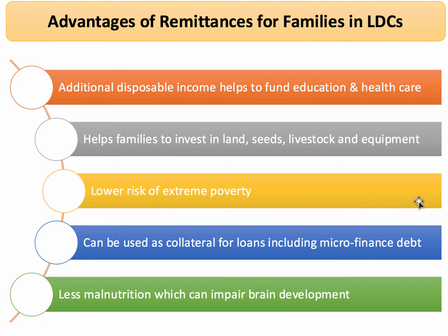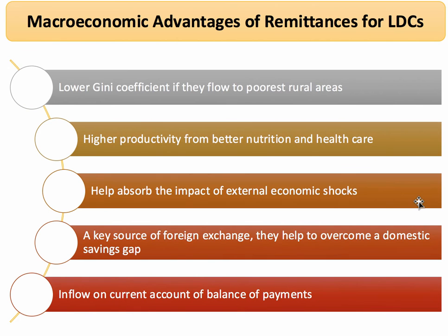Fundamentally, remittances providing household income are vital in terms of reducing the rate of malnutrition, which is widely recognised to impair brain development. So for families, remittances can be significant and very important. The macroeconomic advantages of remittances are essentially the aggregation or the sum of the microeconomic effects, so the previous points are still relevant to the discussion.